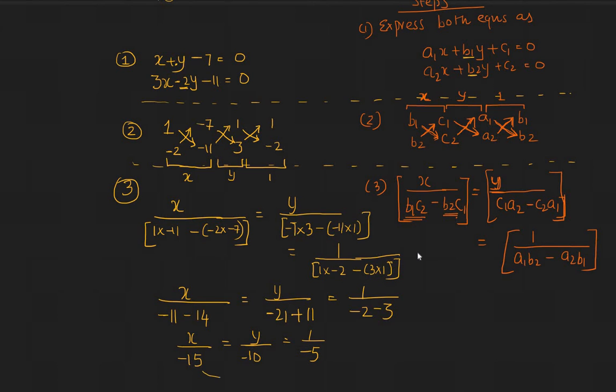In other words, you can now take both of this equation and look at it separately. x by minus 15, equal to 1 by minus 5, or x equal to 3.